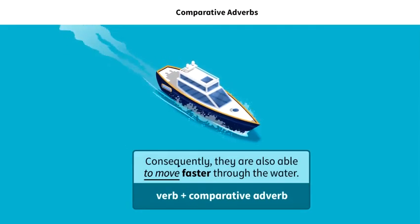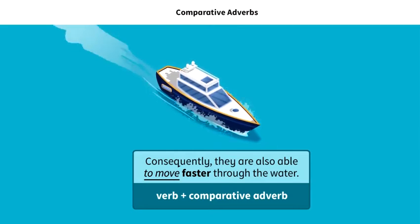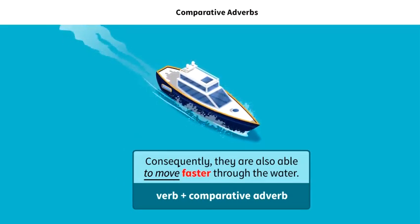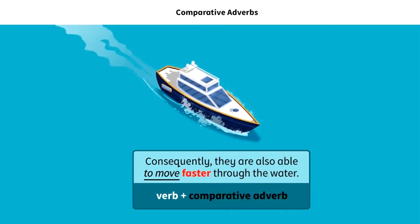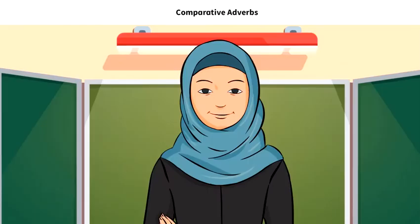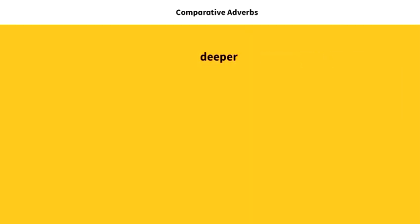Consequently, they are also able to move faster through the water. Here, faster is the comparative adverb. For short adverbs, the comparative form is with -er. For example: deeper, earlier, faster, later, higher, etc.